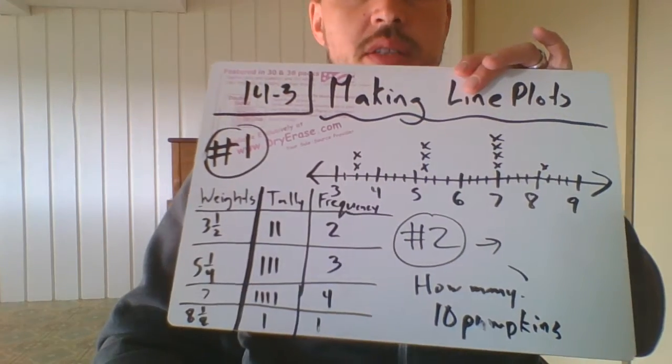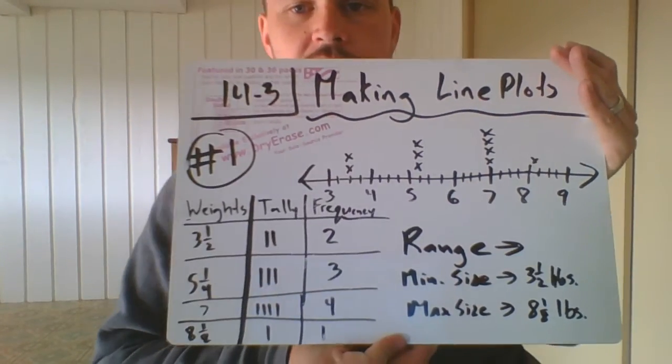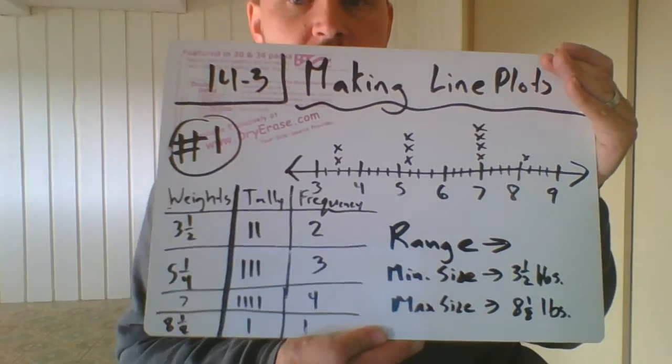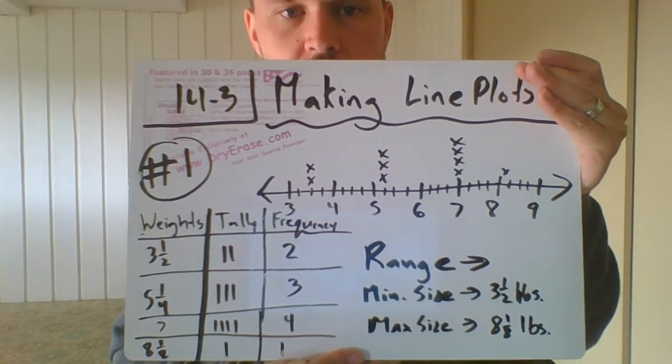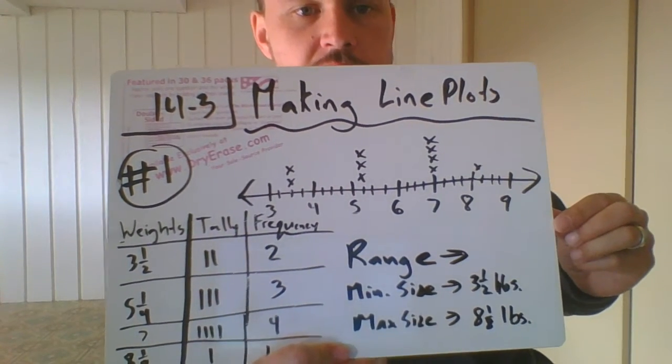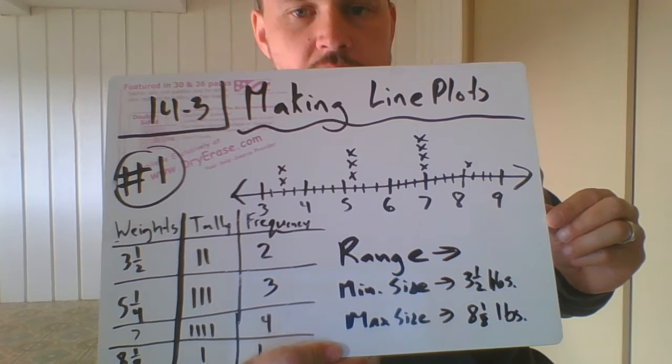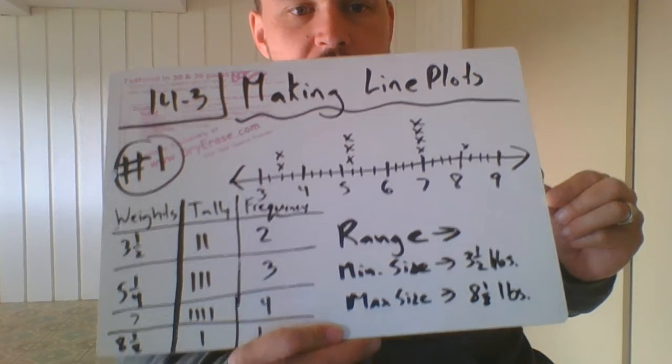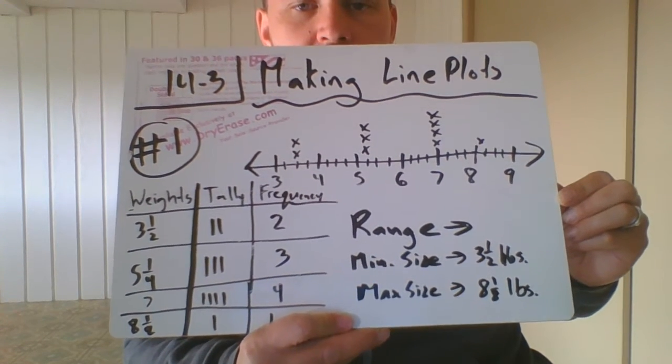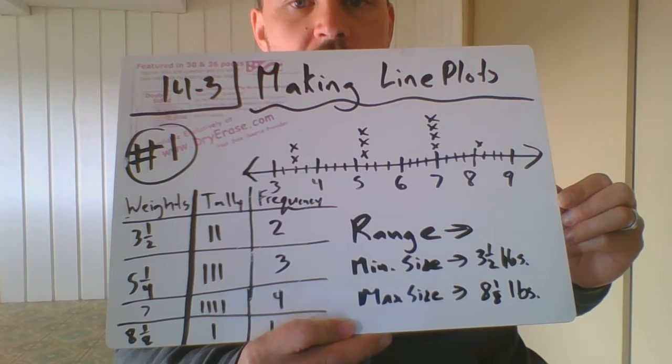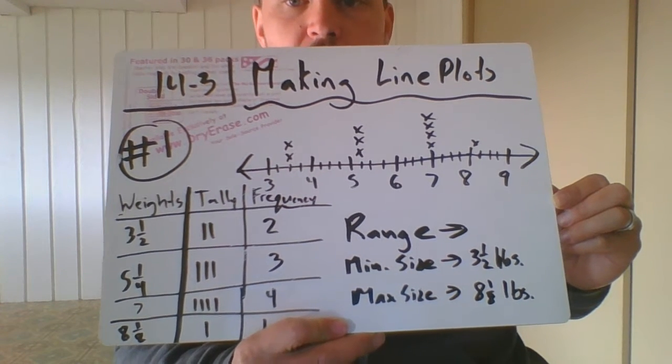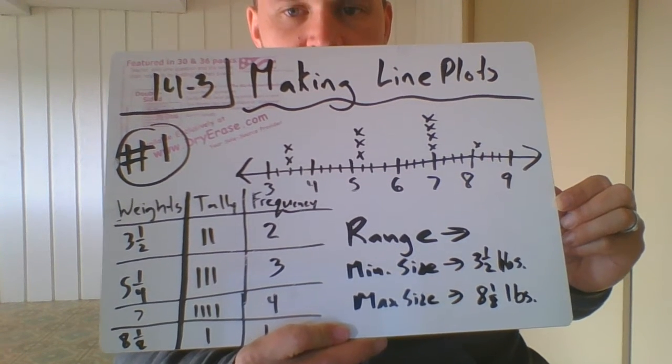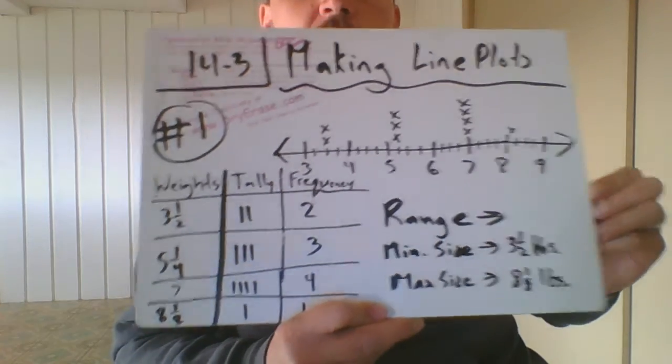Okay, all right. I'm going to pause and show another problem. Okay, something that's going to pop up is the range of pumpkins. So if we look at the pumpkins, the smallest size is three and a half pounds, and the maximum size is eight and one eighth pounds. So to find the range, you find the maximum and the minimum. So you have eight and a half pounds and three and a half pounds.